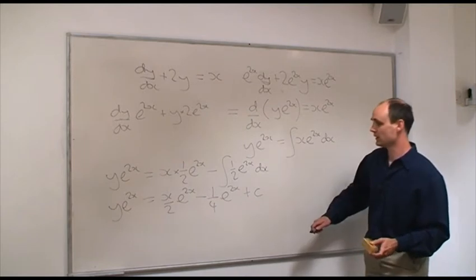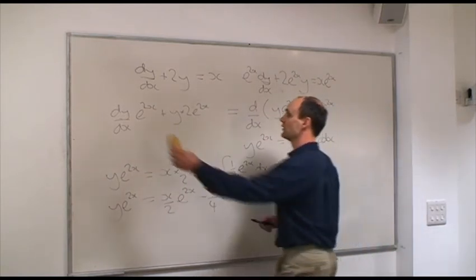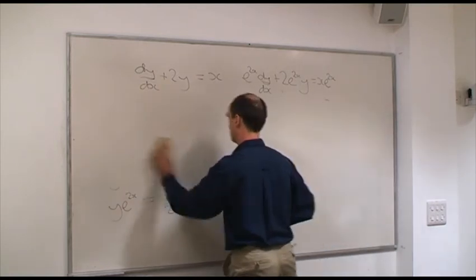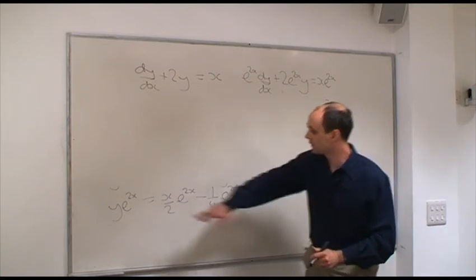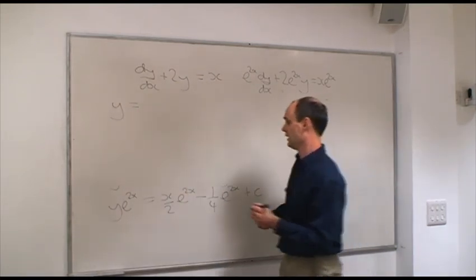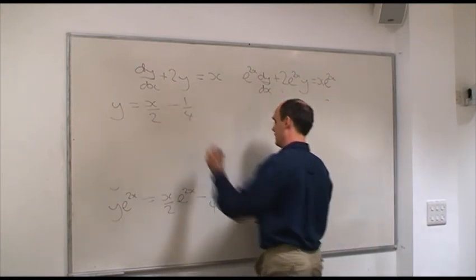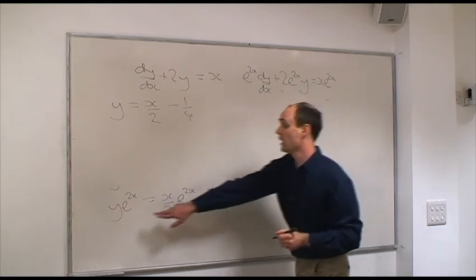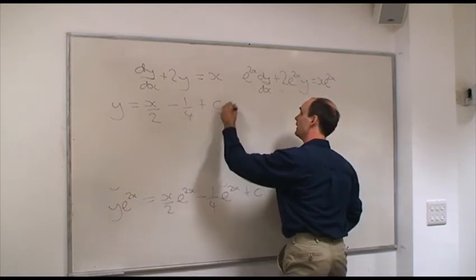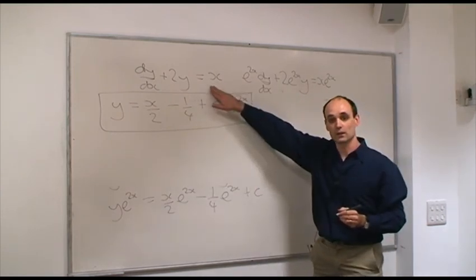The last thing to do is divide the whole equation through by the integrating factor e^(2x). Doing that gives y — which is what we're looking for, a solution to this differential equation — equal to x/2 from the first term, minus 1/4 when we divide through by e^(2x), and then our integrating constant C also gets divided through by e^(2x), giving Ce^(−2x). This then is the general solution of this first-order linear differential equation.